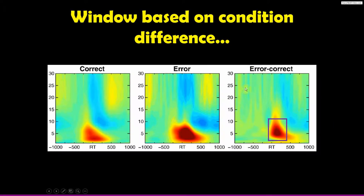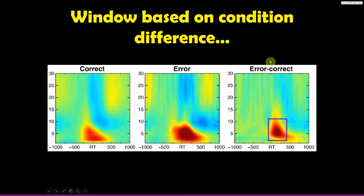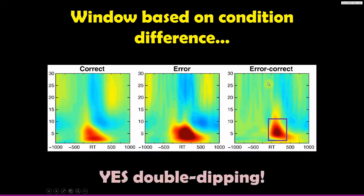If you want to test for differences in power for error minus correct, there are two ways to do it. One is to run statistics on the difference map and apply multiple comparisons correction for testing all those different pixels. The other is to average the two conditions together, pick your window from that average — which happens to give basically the same window — and that way you're picking the window in a way that's orthogonal to the actual difference.